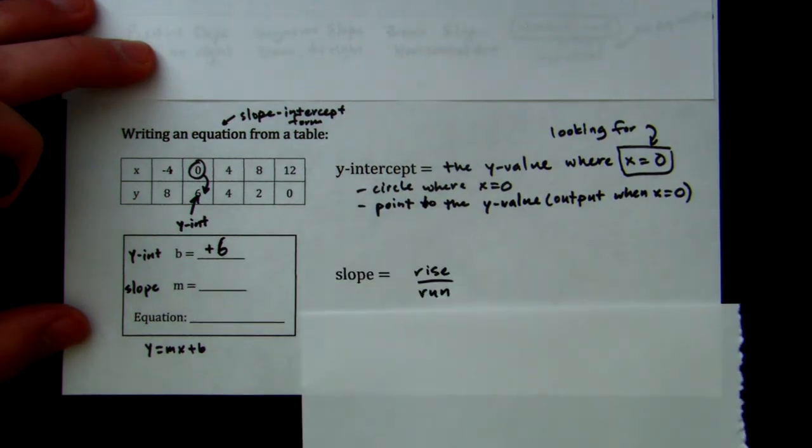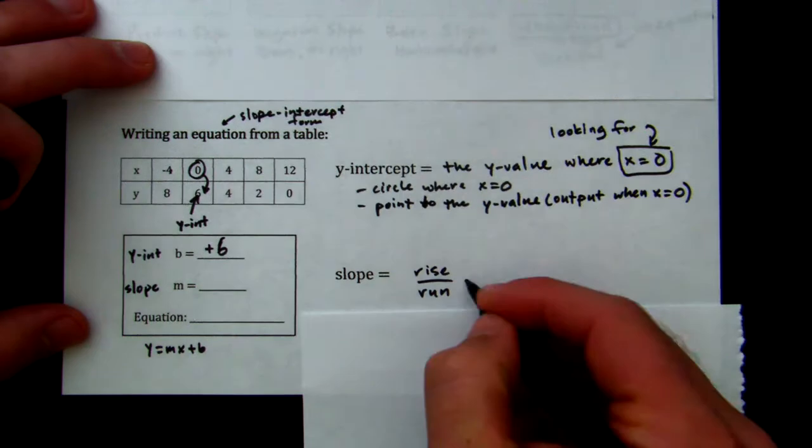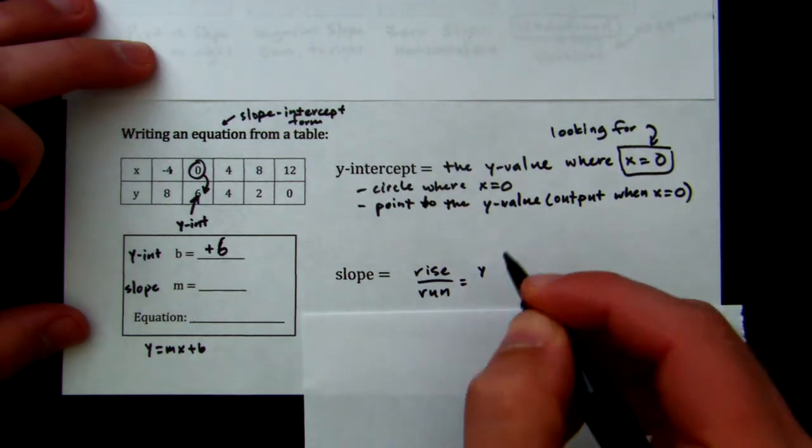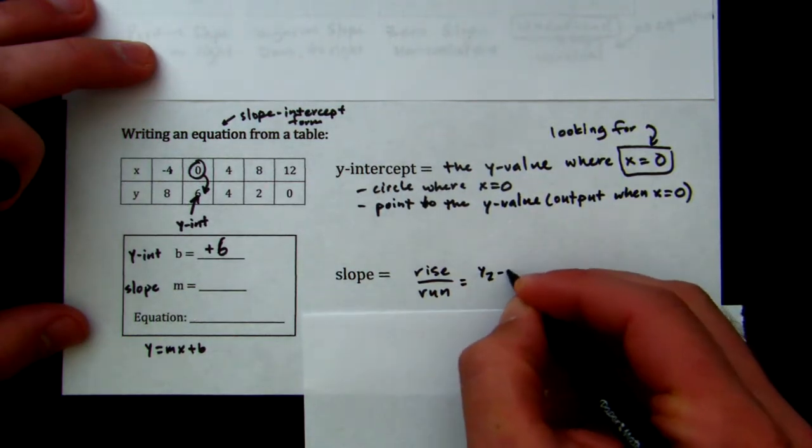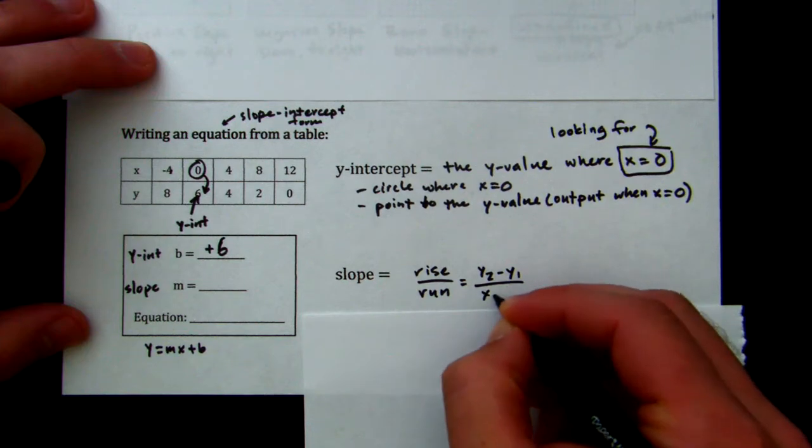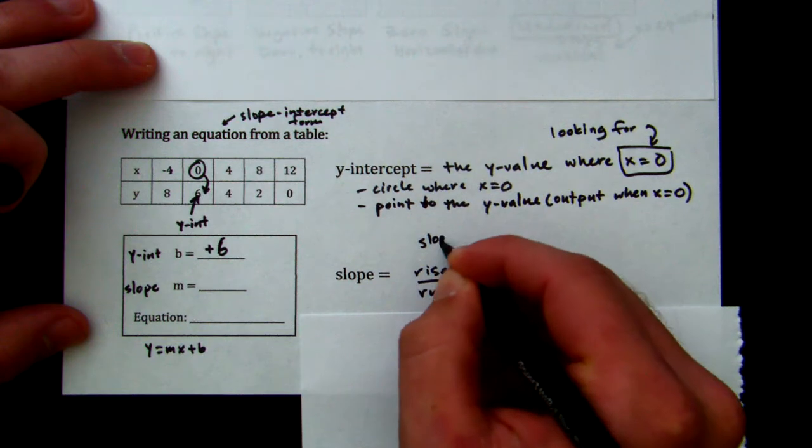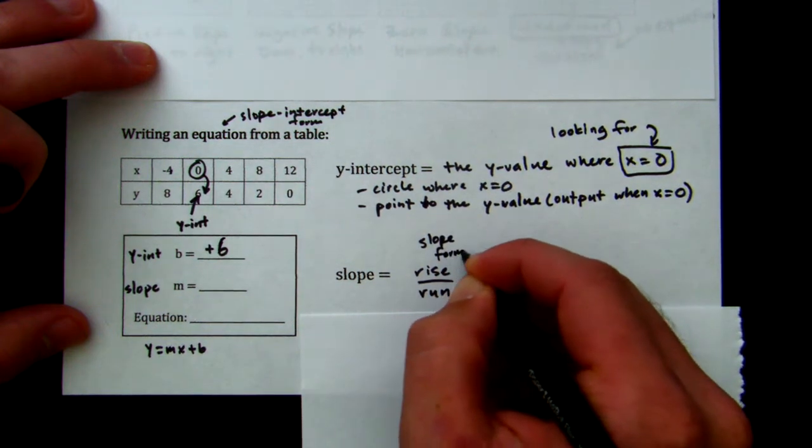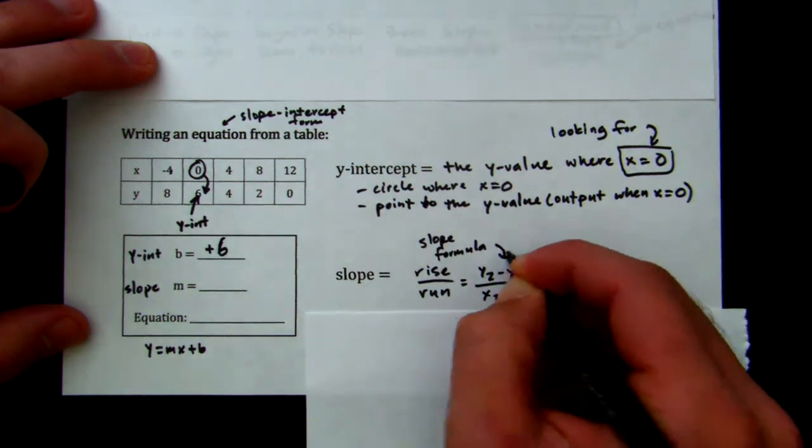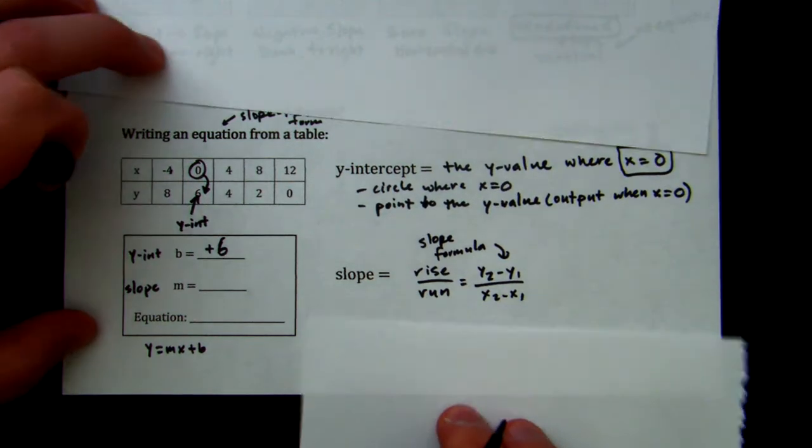Now, slope is rise over run, but we have to use that magical formula: y2 minus y1 over x2 minus x1. And you guys should be so well trained at this. We're going to use our slope formula to find our slope, slash rate of change, of our table. So I can pick any two points that I want.